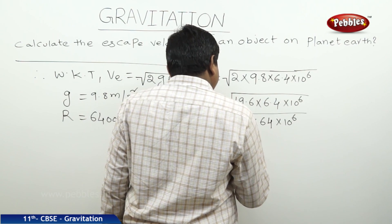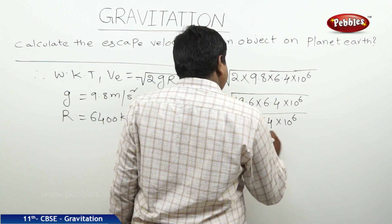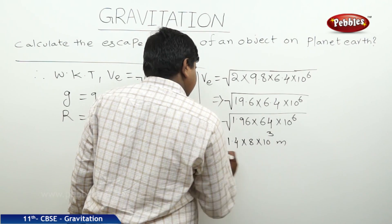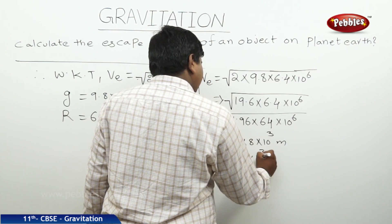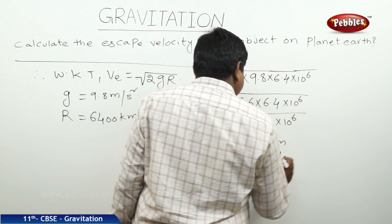So, this will be 1.4 into 8 into 10 cube meters. Therefore, it is 11.2 into 10 to the power of 3 meters per second.